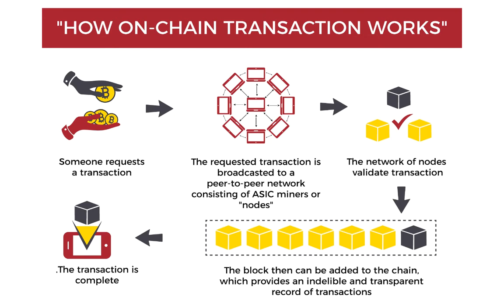How on-chain transaction works: Someone requests a transaction. The requested transaction is broadcasted to a peer-to-peer network consisting of computers called nodes. The network of nodes validate the transaction. The block then can be added to the chain, which provides an unreliable and transparent record of transactions.